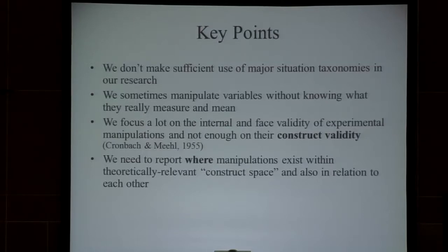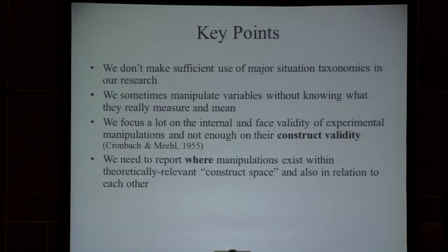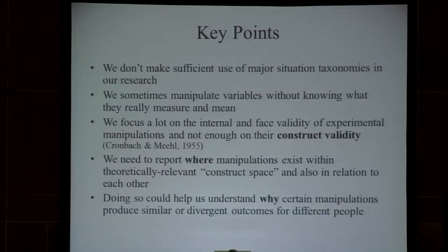I'd like to make the argument that we don't make sufficient use of major situation taxonomies in our research. We do at times, but not enough. We sometimes manipulate variables without really knowing what they measure and what they mean to participants, especially when we're using new manipulations for the first time that have not been tested in different kinds of contexts. We focus a great deal on internal and face validity of experimental manipulations, but we often pay short shrift to construct validity. This is a point that Paul Meehl and Lee Cronbach made many, many years ago.